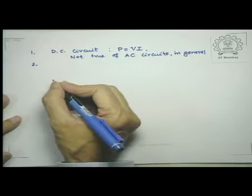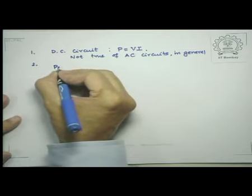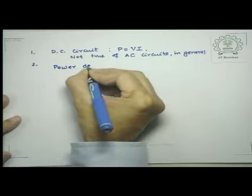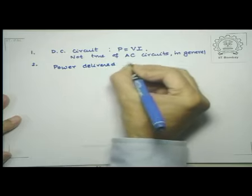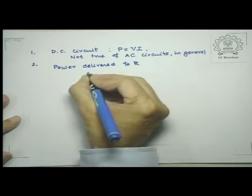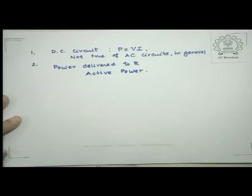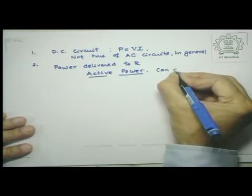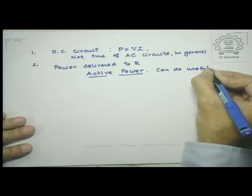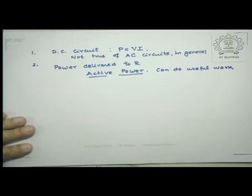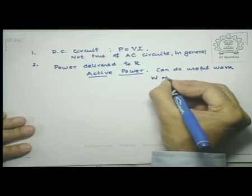The power that is delivered to resistors is what we have been calling active power, or occasionally true power. The reason we call it active power is because this power may be used for doing useful work such as heating, lighting, etc. Active power can do useful work and is usually measured in watts or kilowatts.